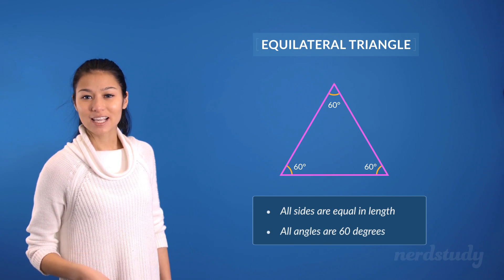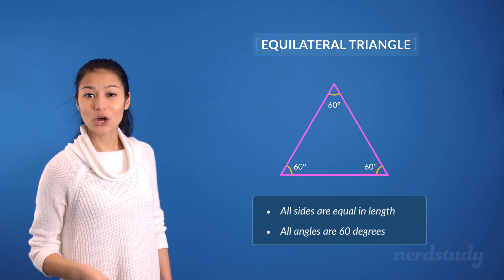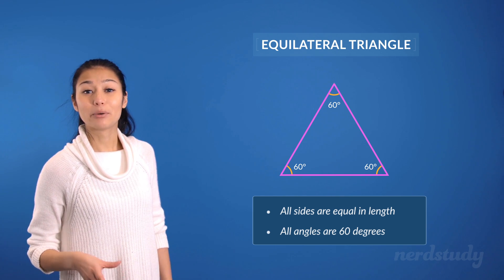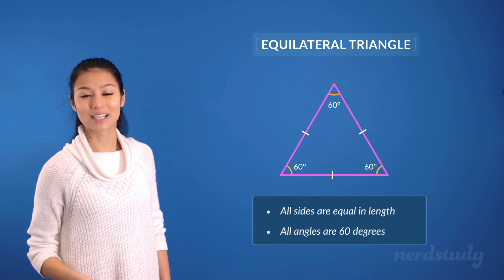Just like our previous examples, we can show that all sides on this triangle are equal by putting matching hatch marks on all sides here.